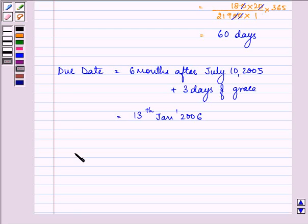We have the discounted period equal to 60 days that we have found out above.